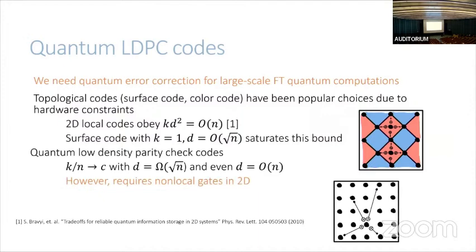As an alternative, quantum LDPC codes have been introduced with much better rate — they have constant rate and can achieve distances better than the square root of n. In recent years, codes with constant rate and linear distance have been found, making them much better performing than the surface code. The drawback is that implementing them on 2D local architectures requires interacting qubits that are potentially very far apart on the grid. For neutral atoms or ion traps this is fine since qubits can be moved, but for superconducting qubits this is a problem.